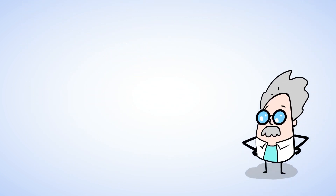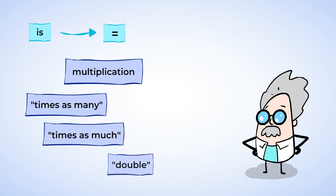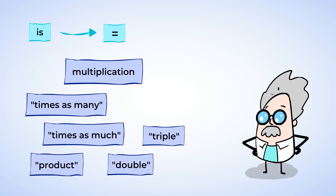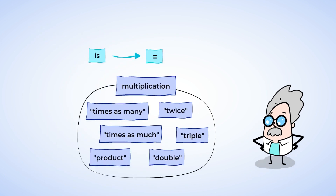Fabulous work today. Let's sum up what you learned. The word is represents the equal sign, and multiplication can be represented by key words and phrases like times as many, times as much, double, triple, product, or twice. Math is like another language, and you worked on translating back and forth from words and sentences into numbers and equations. Great job!